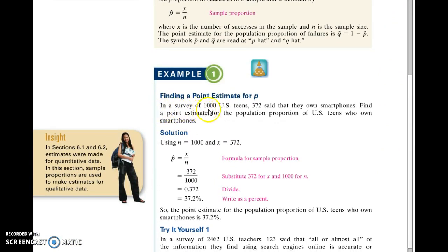To look at Example 1, it illustrates this. In a survey of 1,000 U.S. teens, 372 said they own smartphones. 372 said yes in our sample out of 1,000 total. That gives us a proportion for our sample, which comes out to 37.2%. That would be our point estimate then that goes right in the middle of our confidence interval.